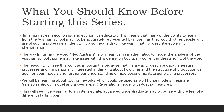We will further be learning about two frameworks which could be used as workhorse models. These are Garrison's growth model, or Garrison's business cycle model, and the overlapping generations model with Austrian features.